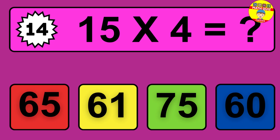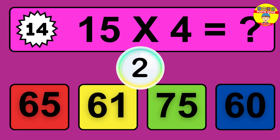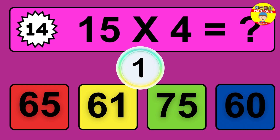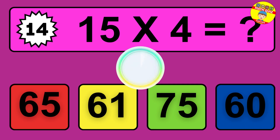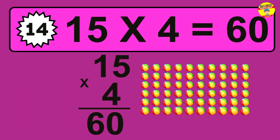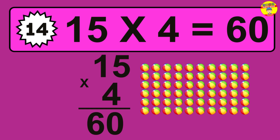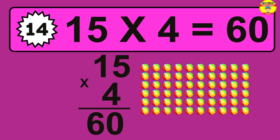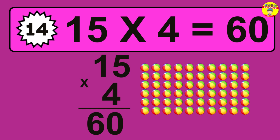Question fourteen: 15 times 4 equals what? The answer is 15 times 4 is 60. To calculate, we have 15 groups with 4 balls each. So how many balls do we have? 60 balls.